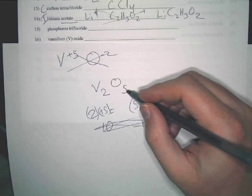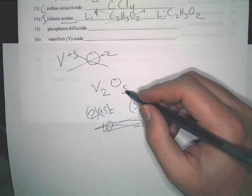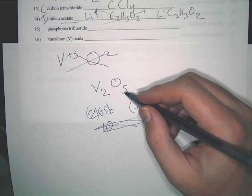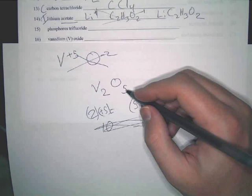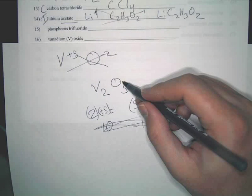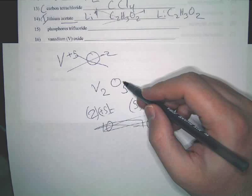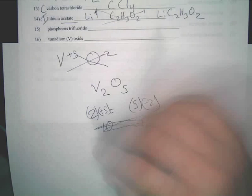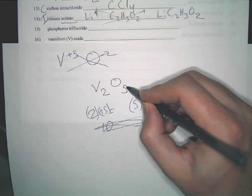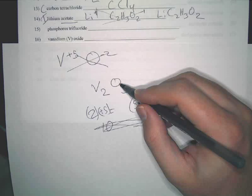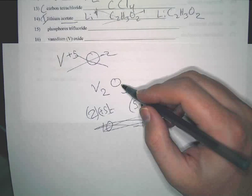The numbers on the bottom are the subscripts. Those are indicating how many of those things I have. Like, we know that oxygen right here, Miriam, is negative two. Because I don't need to include that, though. But the five is telling us that we have five oxygen atoms, all each with a negative two charge. So, the five is telling us there's five oxygen atoms.